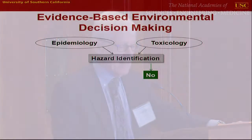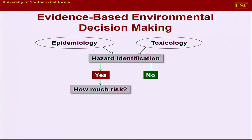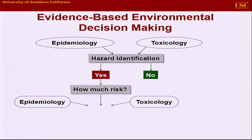In terms of thinking about how we make decisions in environmental health, we use all the data there is and decide if there's a problem — hazard identification and risk assessment parlance. And if the answer is no, we decide the evidence is insufficient or perhaps as an indication of safety, we might quit. And if the answer is yes, we go on to address the question of how much risk, bring in quantification, and epidemiology and toxicology partner there, and we may do a quantitative risk assessment to decide what to do.